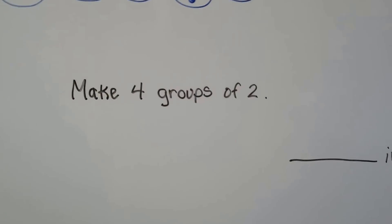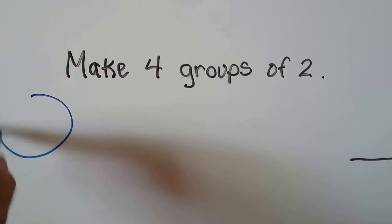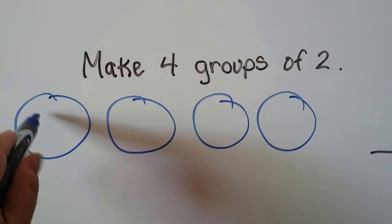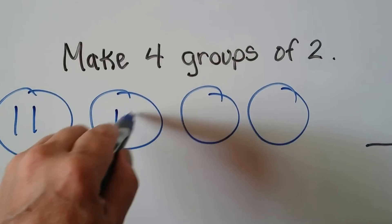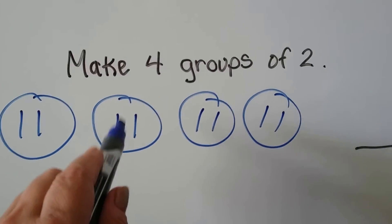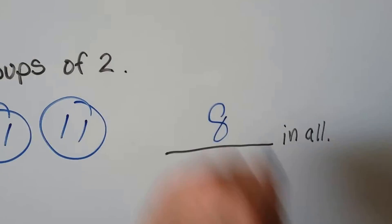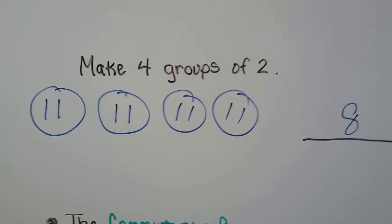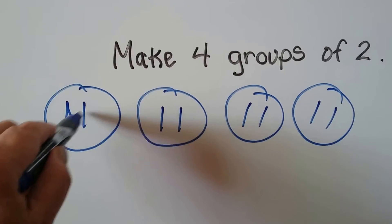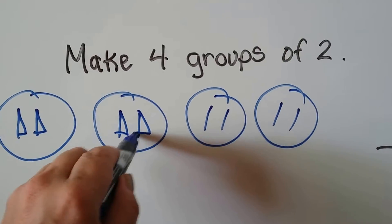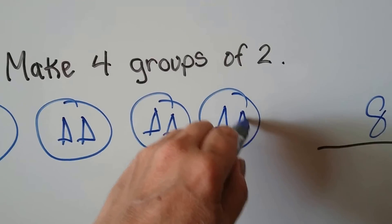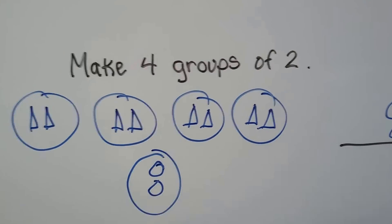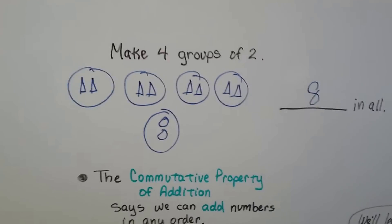Now it says make four groups of two. Let's make our groups first: one, two, three, four — and it says of two. We can use tally marks: two, four, six, eight — eight in all. If it looks like an eleven, just use dots. We could also draw little triangles or small circles — anything works, as long as they all look the same and you have equal groups.